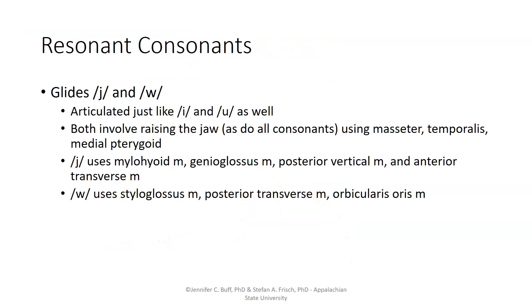Articulation for Y and W is just like E and U, so the jaw will need to be raised, as it will be for all consonants, to help raise the other articulators to make constrictions or closures. In the case of Y, the myelohyoid, genioglossus, posterior vertical muscles, and anterior transverse muscles all work to move the front part of the tongue up into the oral cavity near the alveolar ridge. In the case of W, the styloglossus and posterior transverse muscles bunch the tongue body nearer to the velum, and the orbicularis oris muscle is used around the lips.